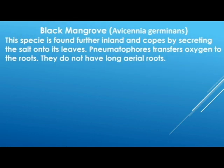Next we have the black mangroves, otherwise botanically known as Avicenia germinans. These species are found further inland — they are the second set of mangroves, behind the red mangroves and further away from the sea. They survive by secreting salt onto their leaves. Their roots have hair-like structures known as pneumatophores, which transfer oxygen to the roots, enabling them to survive. The roots of the black mangroves are not as long as those of the red mangroves.